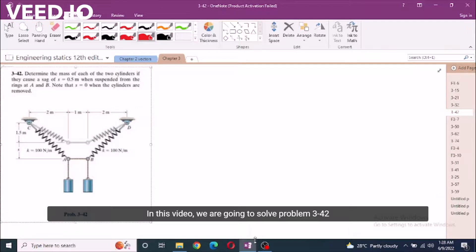In this video, we are going to solve problem 3-42 from R.C. Hibbeler engineering statics 12th edition. According to this problem, determine the mass of each of the two cylinders if they cause a sag of S equals 0.5 meter when suspended from the rings at A and B. Note that S equals 0 when the cylinders are removed.